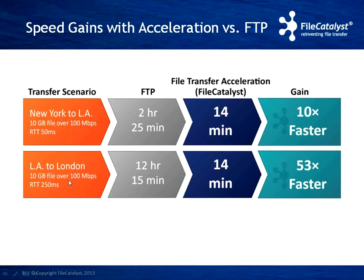Now take the example from LA to London, going over the ocean. The same 10GB file with an RTT of 250ms — that's how long it takes to move one packet from LA to London. FTP takes 12 hours and 15 minutes, while FileCatalyst still takes 14 minutes. That's a 53 times improvement.